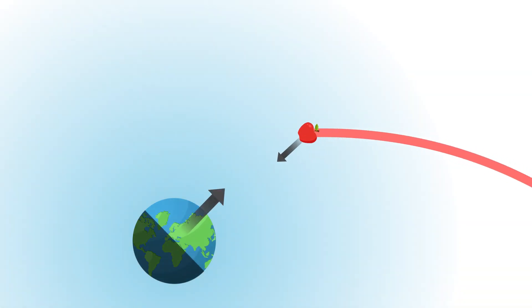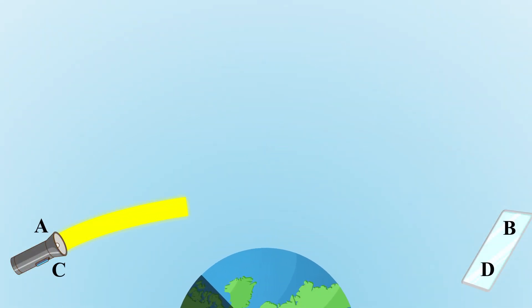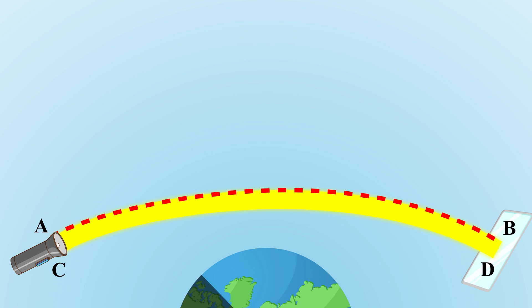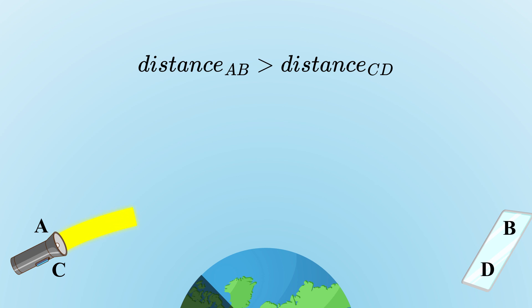According to Newton's law of universal gravitation, any two masses attract each other with a gravitational force. When a beam of light passes near a massive object, it starts at point AC on the flashlight and ends at point BD on the screen. Photons at the top of the beam travel from A to B, while photons at the bottom follow a shorter path from C to D. However, all photons originating from AC should ultimately reach BD at the same time, as we observe the entire light spot appearing simultaneously.